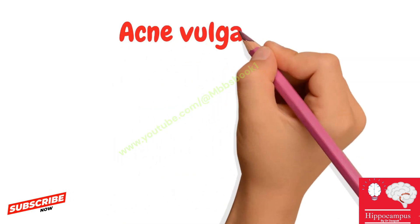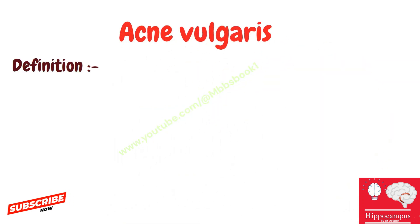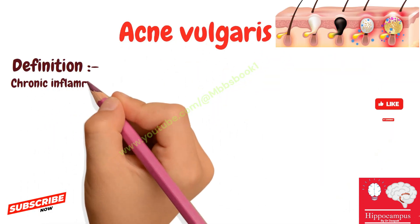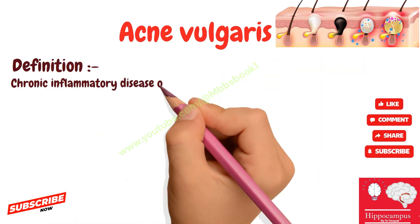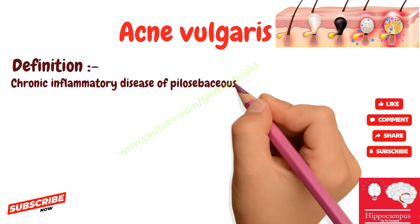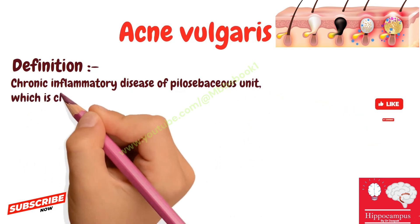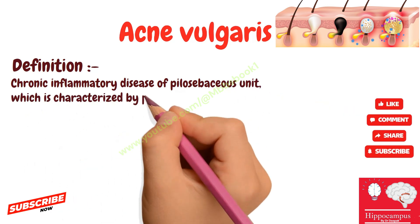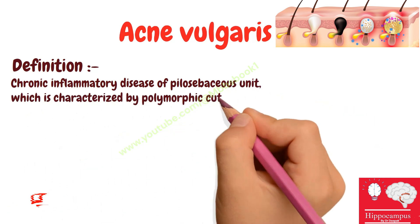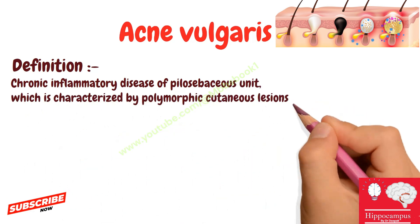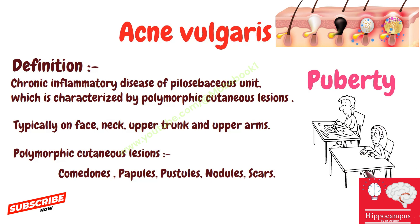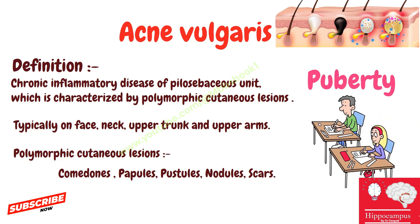Acne vulgaris is defined as a chronic inflammatory disease of the pilosebaceous unit, characterized by polymorphic cutaneous lesions with onset at puberty.